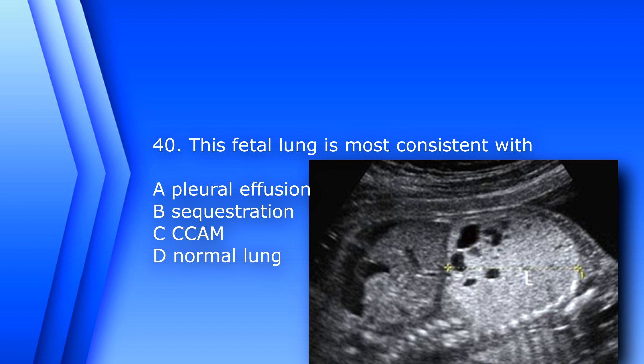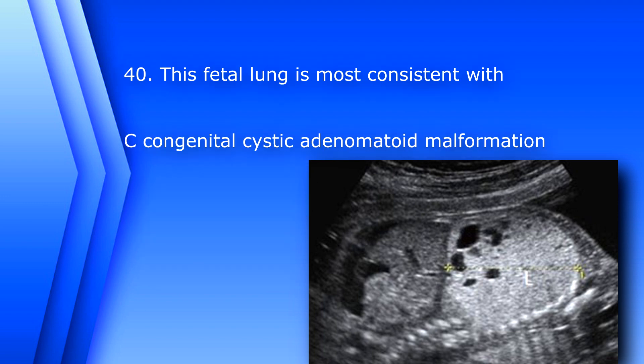Question 40: This fetal lung is most consistent with A) pleural effusion, B) sequestration, C) congenital cystic adenomatoid malformation, or D) normal lung. The answer is C, congenital cystic adenomatoid malformation (CCAM).